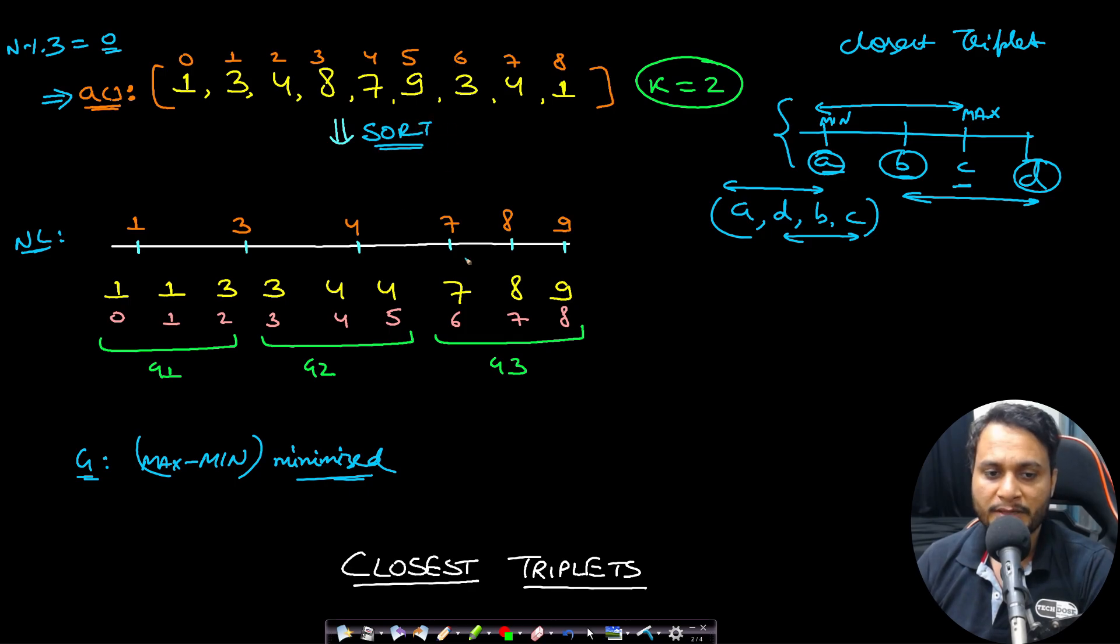So simply, if you apply sorting, in this case I have sorted in ascending order, then all the closest elements will come together. And if you sort them, then you can make the grouping of size 3.